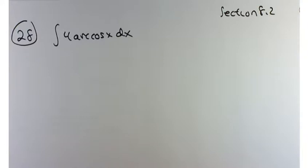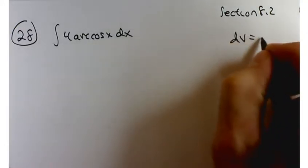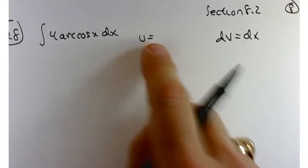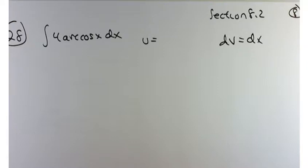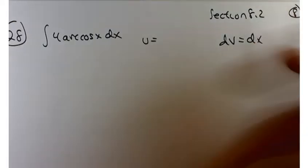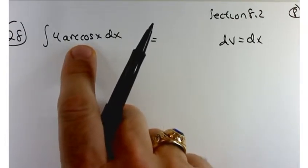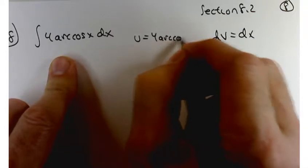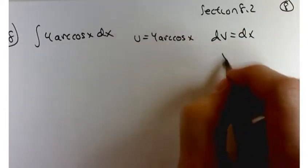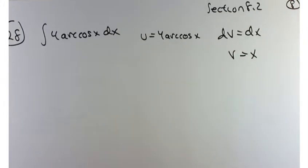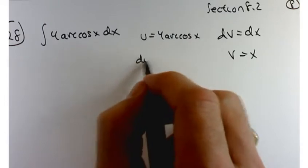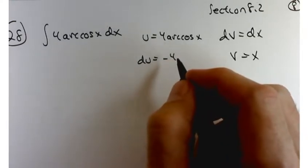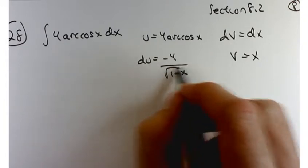Yeah, DV equals DX. Now remember, when you're setting things up, your U part has to be something that when you differentiate it, hopefully it doesn't get a whole lot worse. You have to be able to integrate your DV part. We don't know how to integrate cosine of arc cosine of X, but we do know how to differentiate it. So I'll put that constant here with it for arc cosine of X.